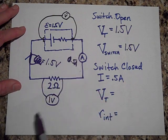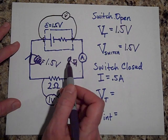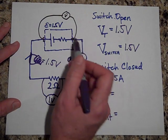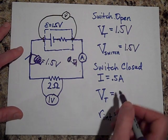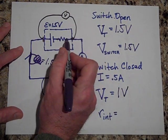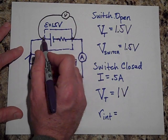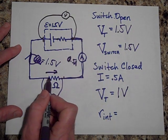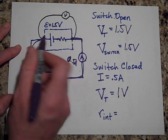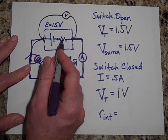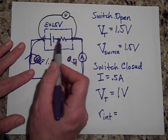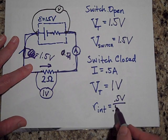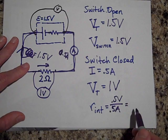If there's one volt across the 2-ohm resistor, I go up 1.5 and drop one, so I have to drop the other half across the internal resistance. The terminal voltage will be one volt — going up 1.5 and dropping a half gives one volt. The internal resistance is the voltage drop across it, which is a half volt, divided by the current of a half amp, so R internal equals one ohm.